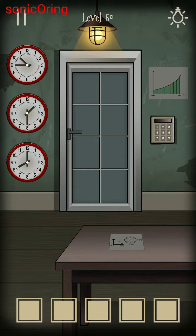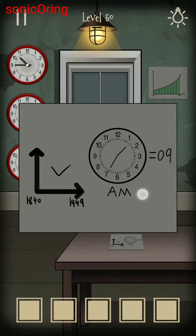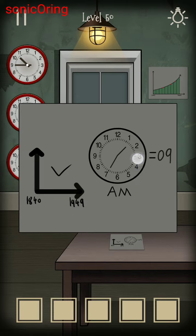My Escape Puzzle Level 50 — this answer is thanks to Alvaro Mari from the comments. First, you need to read 'AM' from the paper. To get '09': it's from 1:35, so you add 0+1+3+5 which equals 9, giving you '09'.